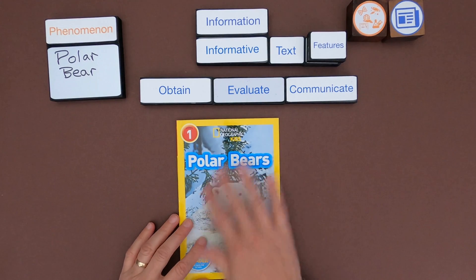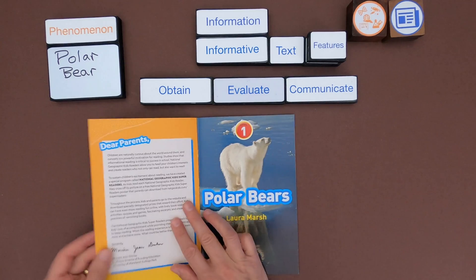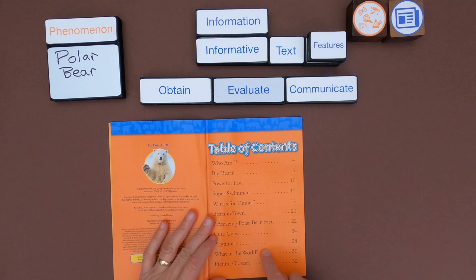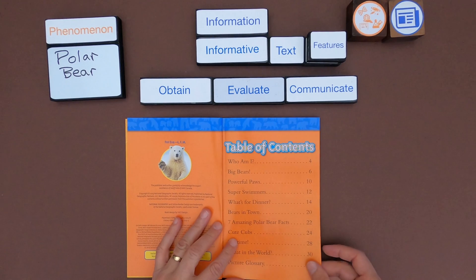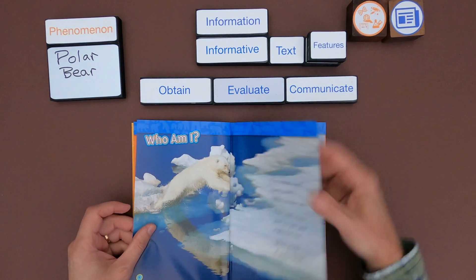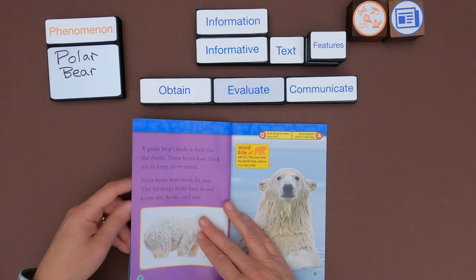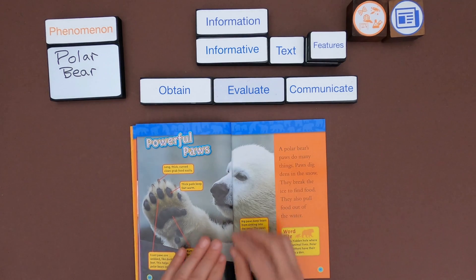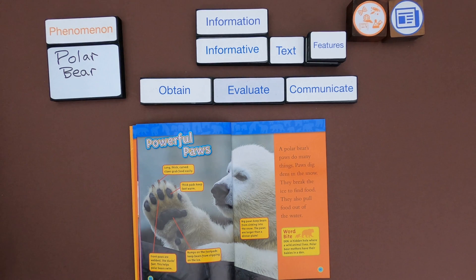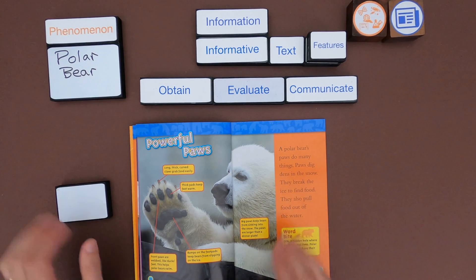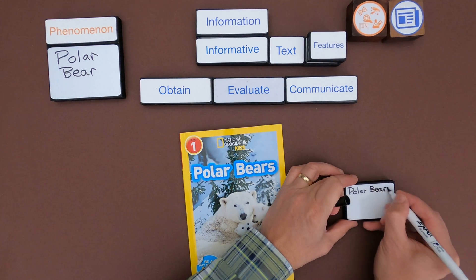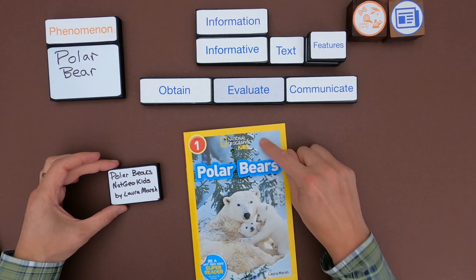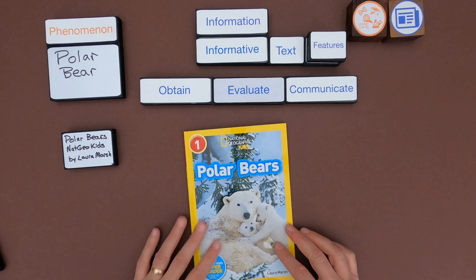Looking at the next text that deals with polar bears, I can see there's a title, and one of the big text features I see right away is a table of contents, which indicates it's organizing information. There's information on bears, titles, call-outs, and photographs — so I think this is a good informative text. The first thing I want to do is write down more about the text so I can cite it. This is 'Polar Bears' by National Geographic Kids, and the author is Laura Marsh, so I'm going to write that off to the side.